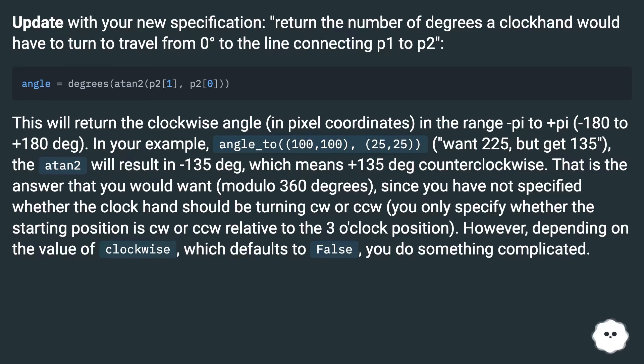In your example, angle_to(100, 100, 125, 25) want 225 but get 135. The atan2 will result in -135 degrees, which means +135 degrees counterclockwise. That is the answer that you would want modulo 360 degrees, since you have not specified whether the clock hand should be turning CW or CCW.